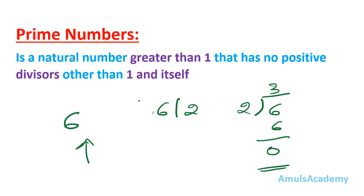As I said, 1 is not a prime number because earlier Greeks did not even consider 1 as a number, so they could not consider it to be a prime number. By the middle ages many mathematicians included 1 as the first prime number, but in the 20th century mathematicians came to a conclusion that 1 is not a prime number — it has its own category called a unit. So 1 is not a prime number.